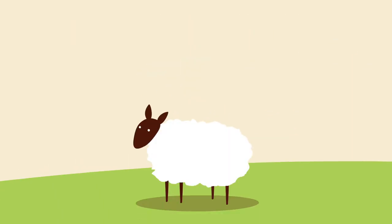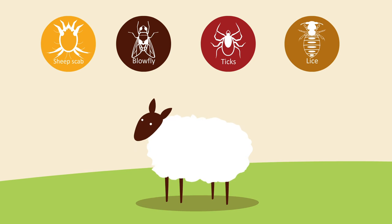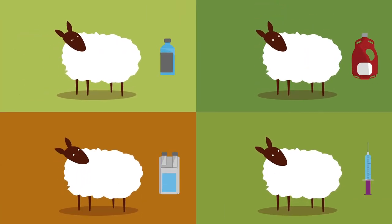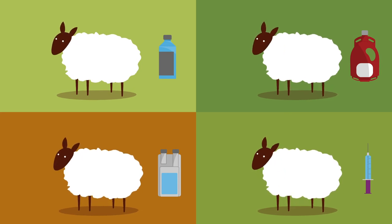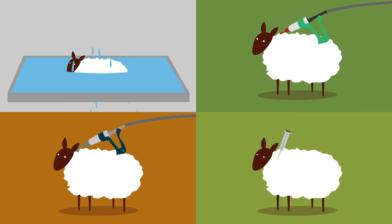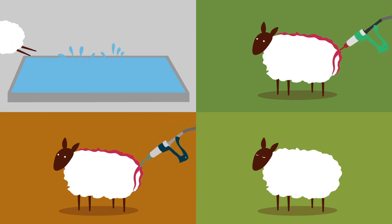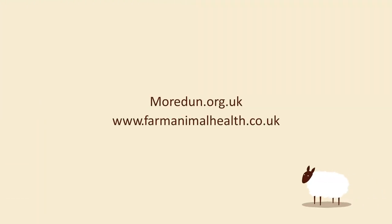To make the most of your medicines and for effective control of ectoparasites in sheep, be sure to get the correct diagnosis. Then use the right product for the right parasite at the right time, and apply the right amount using the right method, making sure it all gets onto the animal and stays there. To find out more, please visit our websites.